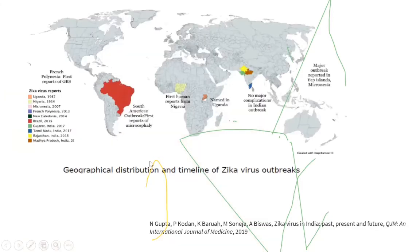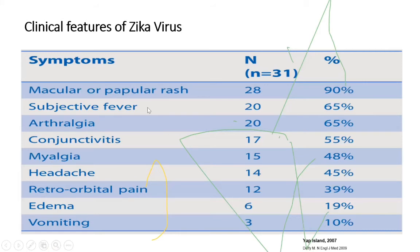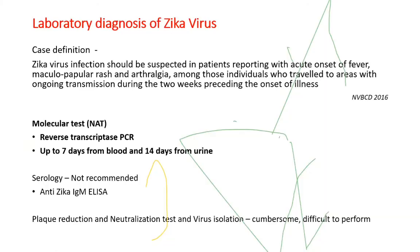Geographical distribution and timeline of the Zika virus outbreak: India has recently reported Zika from Rajasthan, Madhya Pradesh, and a few cases from South India. Clinical symptoms include rash, fever, arthralgia, conjunctivitis, headache, orbital pain, edema, and vomiting. Per national guidelines, Zika virus infection should be suspected in patients with acute onset fever, maculopapular rash, and arthralgia among individuals who have travelled to areas with ongoing Zika transmission in the preceding two weeks.